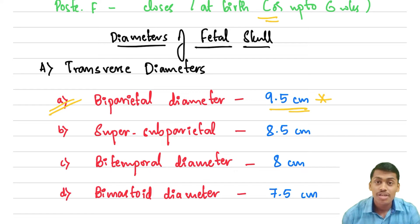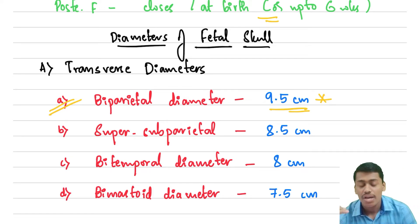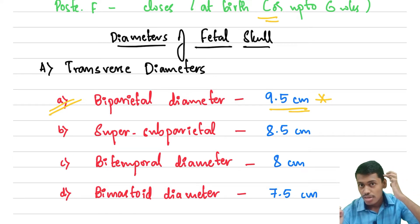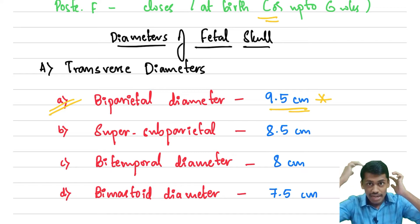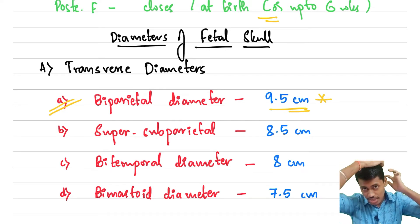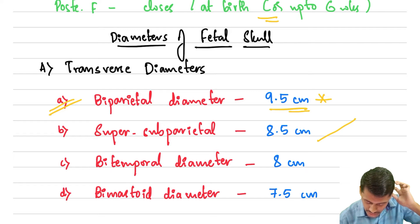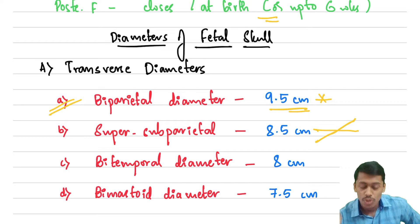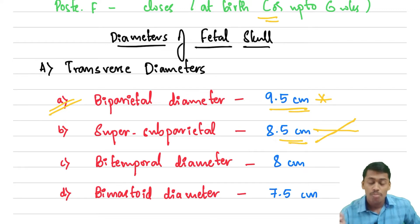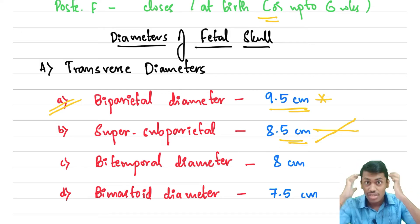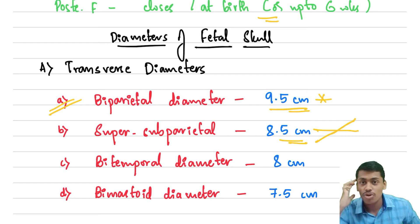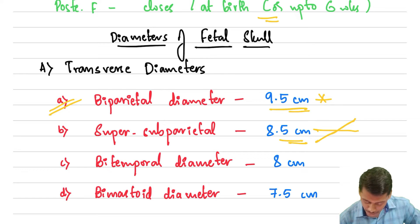The biparietal diameter measures up to 9.5 centimeters. The second one is called the super-subparietal diameter — just a little bit below the parietal eminence on one side and a little bit above on the other side, making a diagonal. The super-subparietal diameter measures up to 8.5 centimeters. Then we have the bi-temporal diameter, which is the diameter from either side of the coronal suture to the other side, and it measures up to 8 centimeters.